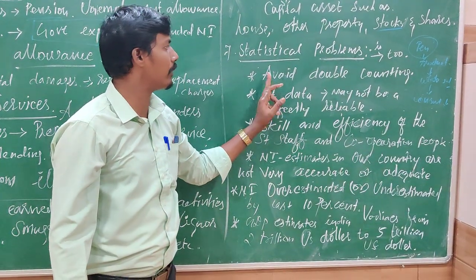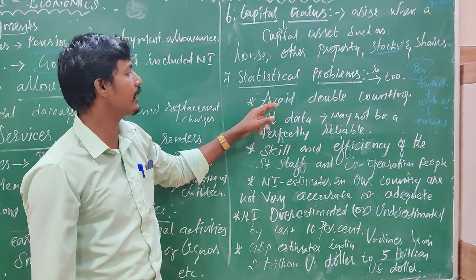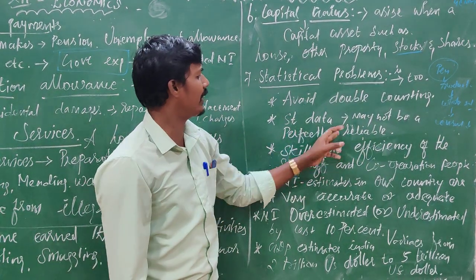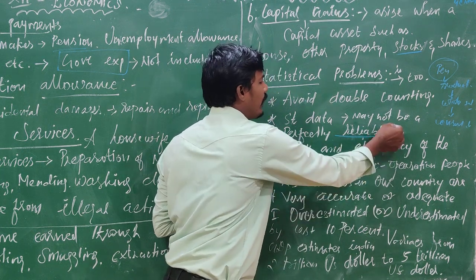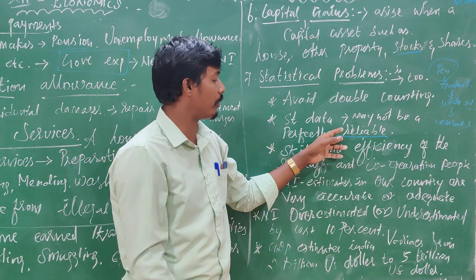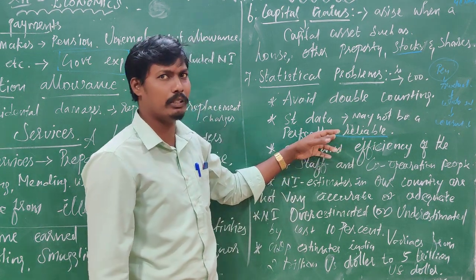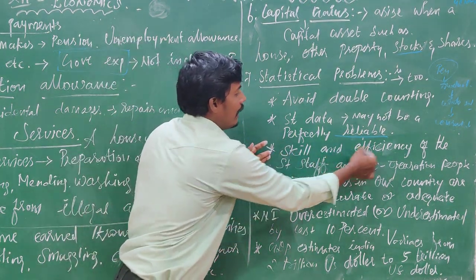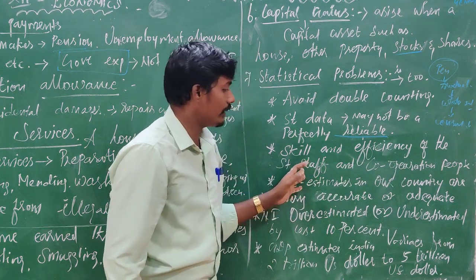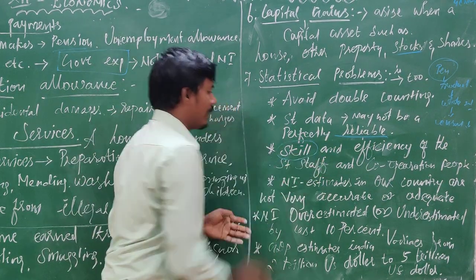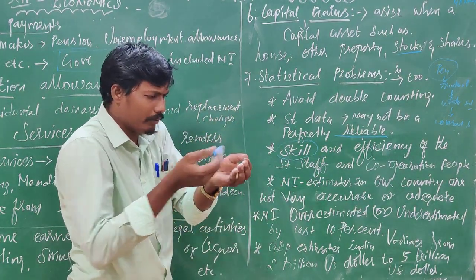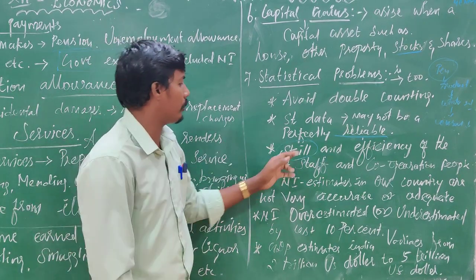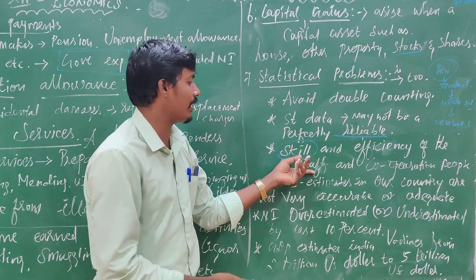That is double counting. To avoid it, we use the value-added method. This is the statistical problem — double counting should be avoided. Statistical data may not be perfectly reliable. Primary sector data collection may not be reliable. Skill and efficiency of the staff is important.